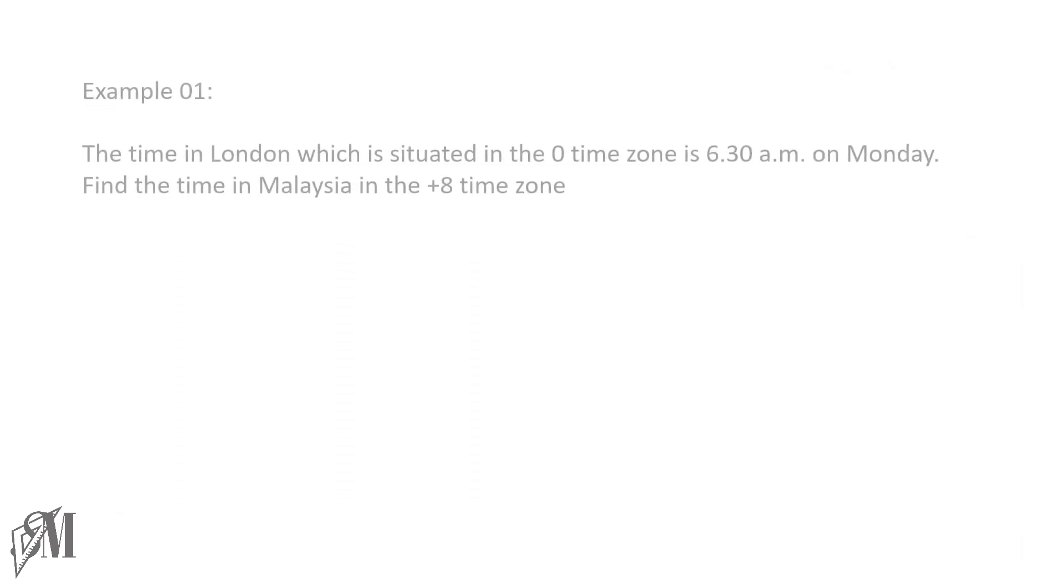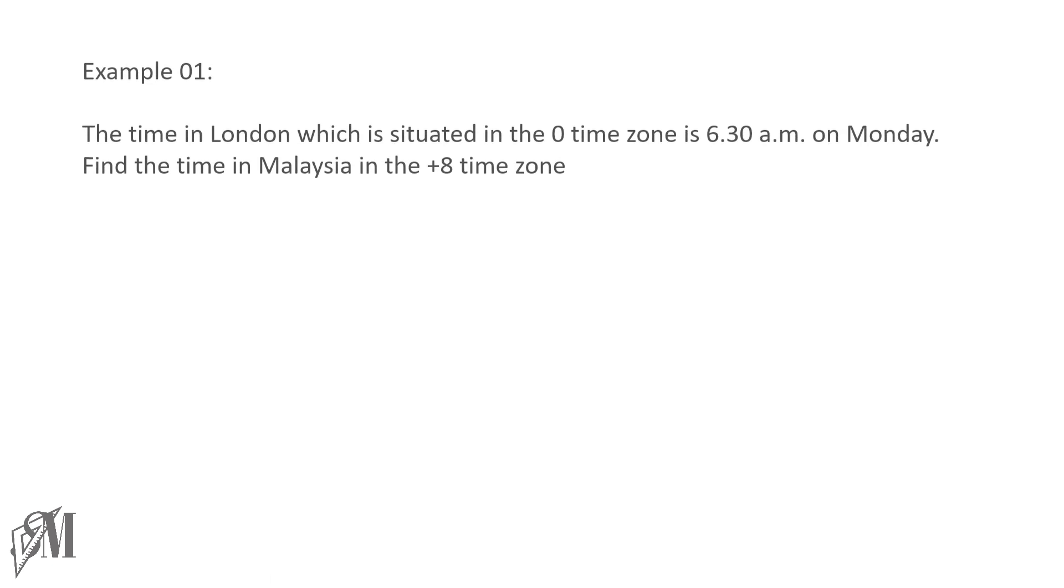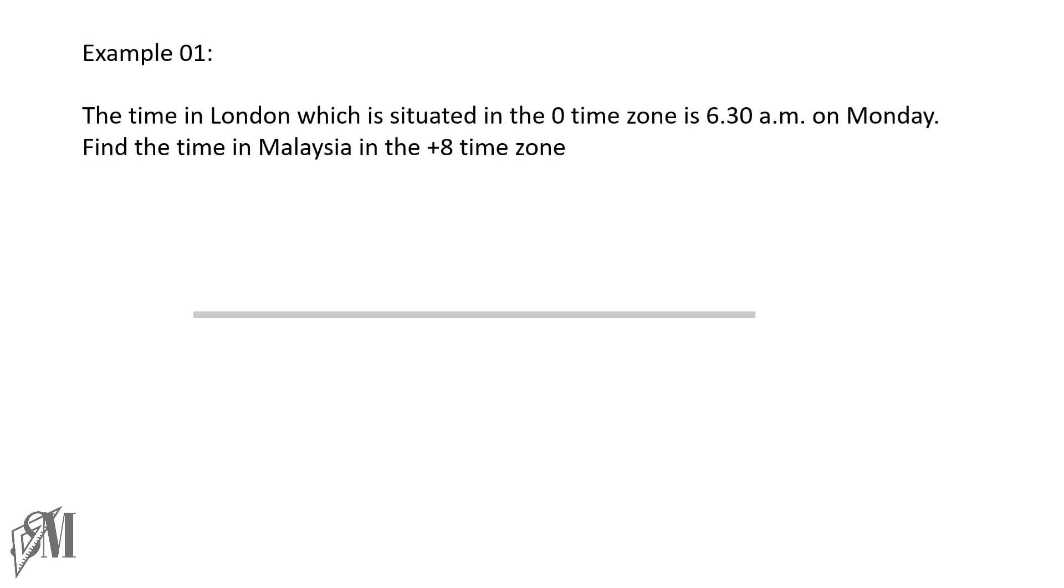Let's move on to some examples. The first example is that the time in London, which is situated in the zero time zone, let us mark it on a line like this. London time zone is zero and the time is 6:30 AM, and it is a Monday. And then we have to find the time in Malaysia, which is in the +8 time zone. So let me mark Malaysia like this. It is in the +8 time zone.